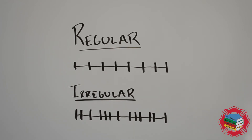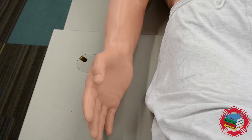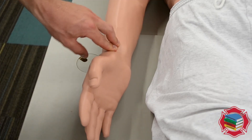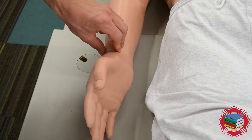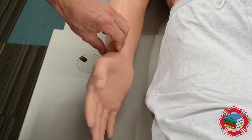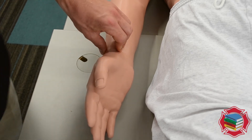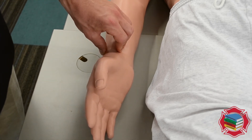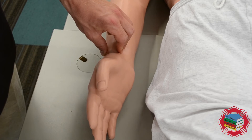Irregular pulses can be further described as regularly irregular or irregularly irregular, meaning there is a pattern to the irregularity or there is no pattern to the irregularity. Once we've determined if it's a regular or an irregular pulse, we will hold our fingers on the pulse site for 30 seconds, counting each beat — it's essential that you have a watch for this skill. Count each beat for 30 seconds for a regular pulse, then multiply by 2 to get the heart rate per minute.